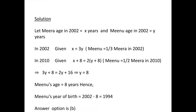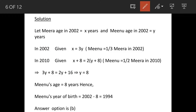We will see the solution. Let's assume that Meera's age in 2002 is X years and Minoo's age is Y years. It is given that Minoo's age is one third of Meera, or we can say Meera's age is three times that of Minoo. That means X is equal to 3Y.